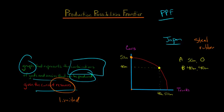To go from point A to point B, what are they giving up? They're giving up 10 million cars, going from 50 million to 40 million — 10 million fewer cars produced. But what are they getting in exchange? They're getting 40 million trucks. So they're getting 40 million trucks but only giving up 10 million cars. That's the marginal cost of going from A to B — 10 million cars gets you 40 million trucks.